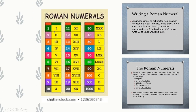Roman numerals: 1 is written as I, 2 as II, 3 as III. Whereas 4 is written as IV — because a Roman numeral cannot be repeated more than 3 times. Also, if a small Roman numeral lies to the left of a bigger Roman numeral, we subtract; if it lies to the right, we add. So 4 is IV: V is 5, I is 1, so 5 minus 1 equals 4. 5 is V. 6 is VI: 5 plus 1 equals 6. 7 is VII, 8 is VIII, and 9 is IX: X is 10, I is 1, so 10 minus 1 equals 9. 10 is X, 11 is XI: 10 plus 1 equals 11.